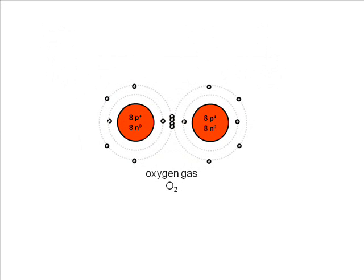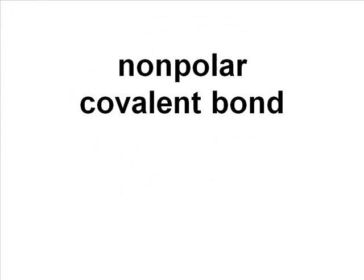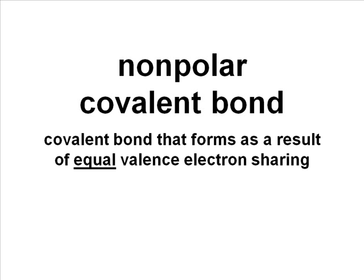Well, it's Sesame Street — they're going to share them equally; each kid gets two cookies. In the case of oxygen gas, two oxygen atoms share two pairs of valence electrons equally. The result of this equal sharing is what's called a nonpolar covalent bond, meaning each of the two nuclei involved gets equal time with the shared electrons.